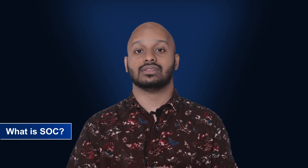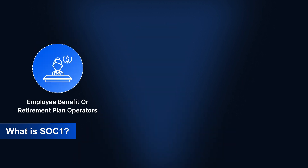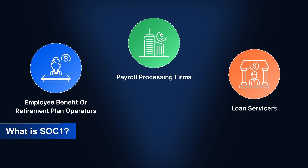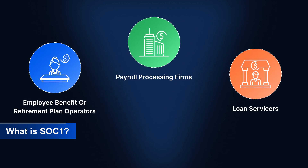SOC 1 evaluates service organization controls that are applicable to a company's internal controls over financial reporting. It's primarily used by accountants who audit the financial statements of a company and is typically asked of financial services companies like employee benefit or retirement plan operators, payroll processing firms, loan services, or other similar organizations.